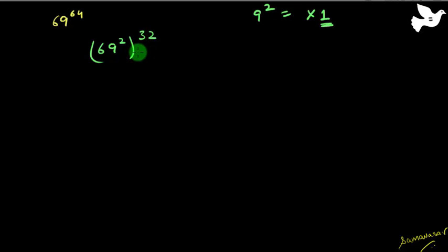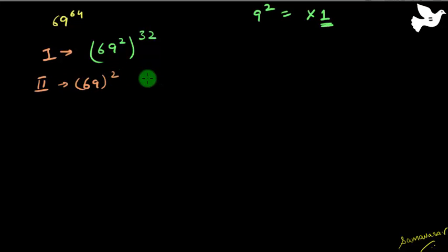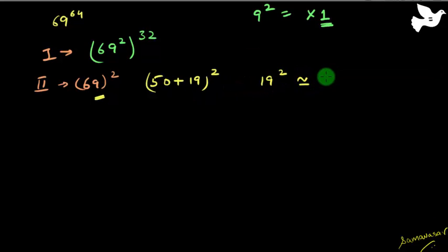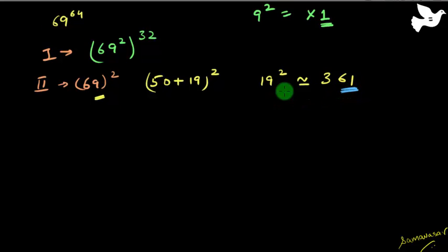Now in step 1, I need to find this inner value. I'm looking at 69 raised to the power 2. Whenever you have a square, you express it in terms of 50 plus or minus something, or 100 plus or minus something. This equals 50 plus 19, raised to the power 2. So the last 2 digits of this will be the same as the last 2 digits of 19 squared. 19 squared is 361, so the last 2 digits of 69 squared are 61.